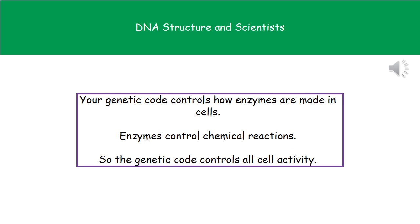If you think back to what we said about the nucleus controlling the cell, the reason it does so is because inside our nucleus we've got DNA. The DNA split into genes which code for proteins. One example of the proteins coded for are enzymes. Your genetic code actually controls how enzymes are made in cells. These chemical reactions that occur in all aspects of cellular life are controlled by enzymes. Because our genetic code controls how enzymes are made, and enzymes control the chemical reactions, the genetic code controls all cell activity.